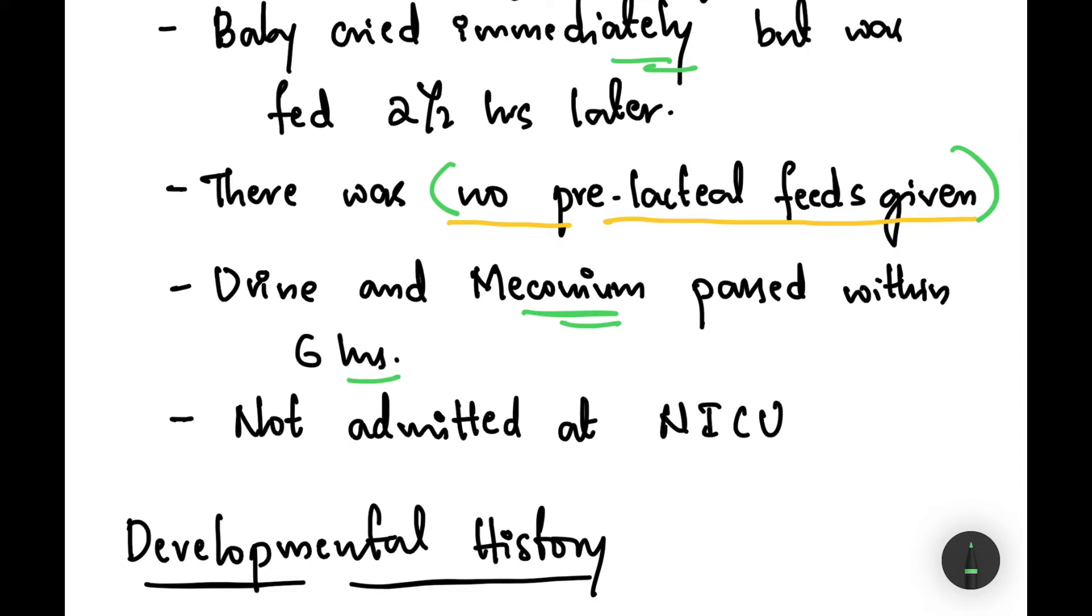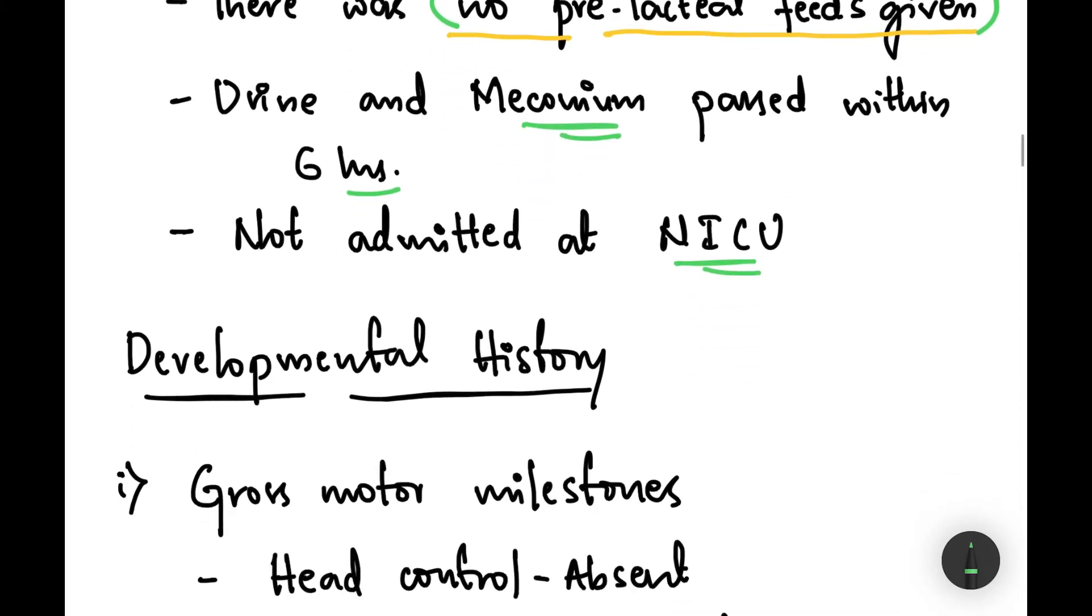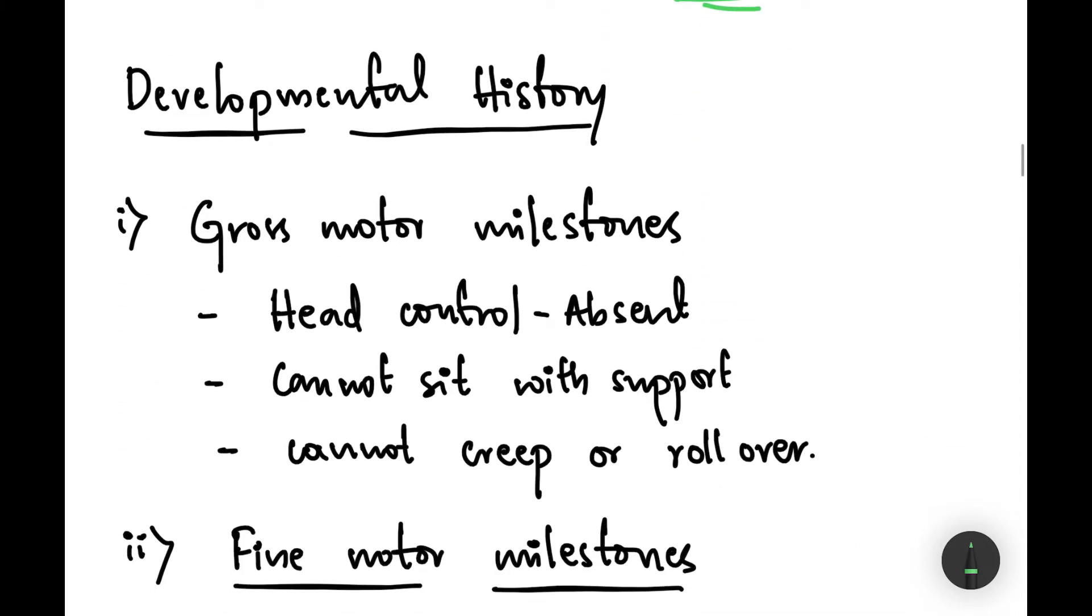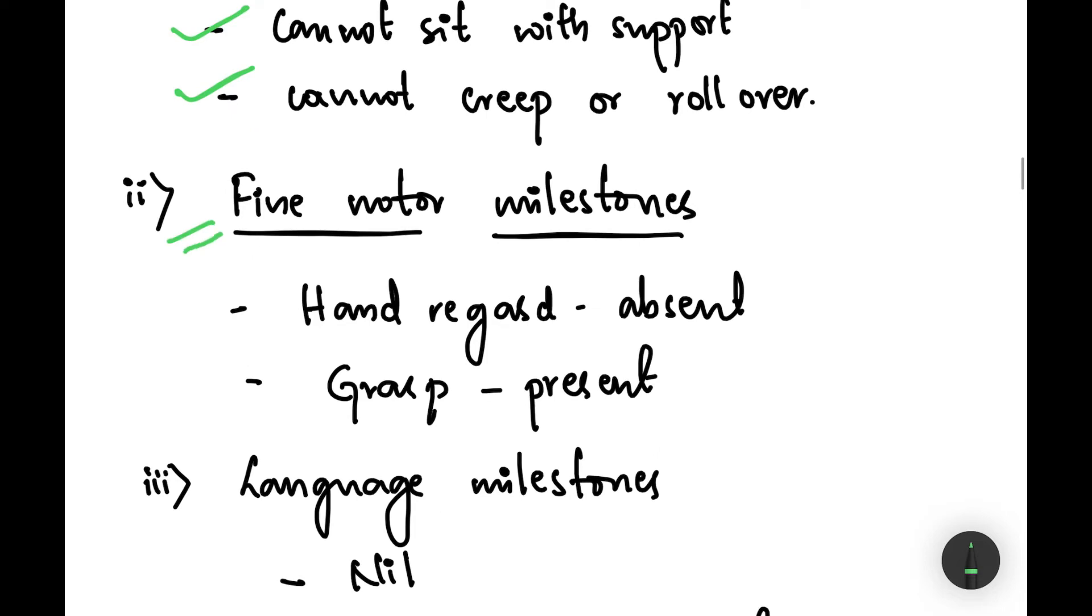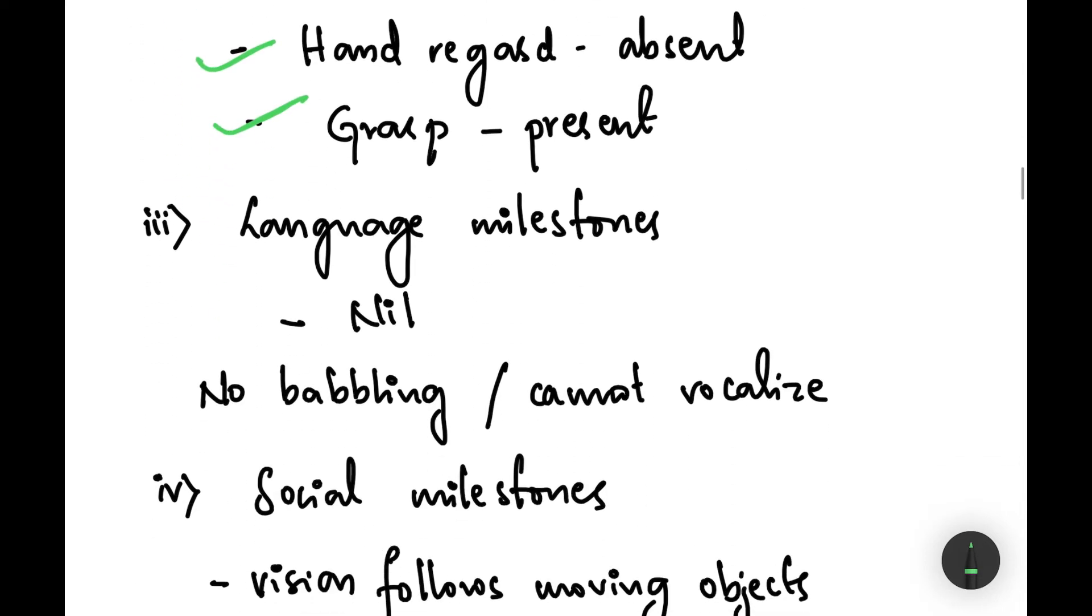Coming to the developmental history, firstly discussing the gross motor milestones: head control is absent and the baby cannot sit with support, cannot creep or roll over. Moving on to the fine motor milestones, hand regard is absent but grasp is present.